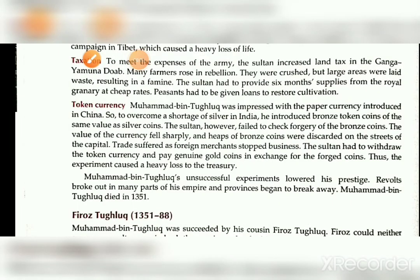Another wrong decision was the introduction of token currency. Impressed by paper currency in China, Tughlaq introduced bronze coins equal in value to silver coins to overcome the shortage of silver. However, when bronze coins became popular, people began to make duplicate coins, which led to a huge economic problem and a fall in trade. He was forced to withdraw the bronze coins.